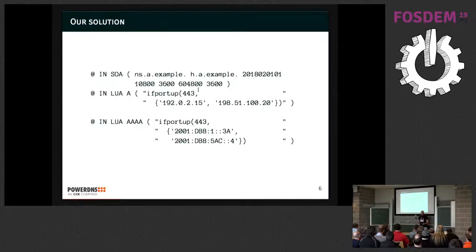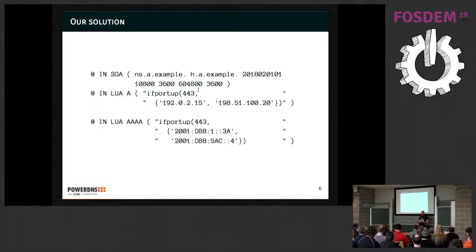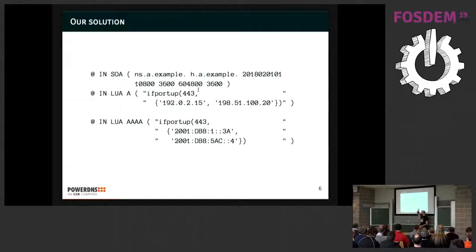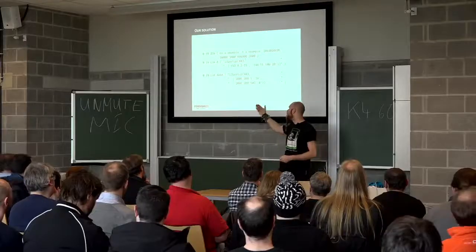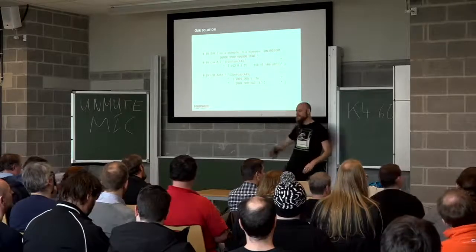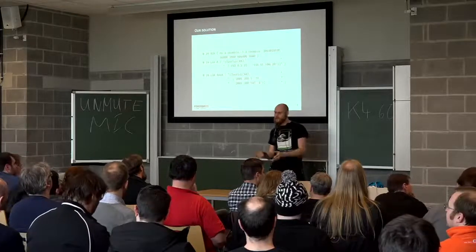Here is a small example zone. It has a LUA A record and a LUA quad-A record, already showing some of the features we've implemented. If this server gets a query for A.example, it will execute this bit of LUA which says: if port 443 — the HTTPS port — is up on one of these two IP addresses, it will return the address that is up. If both are up, a random address is returned, or you can select which one should be returned. We check this every second from the name server, and if it's down, we mark it as down and do the redirection.